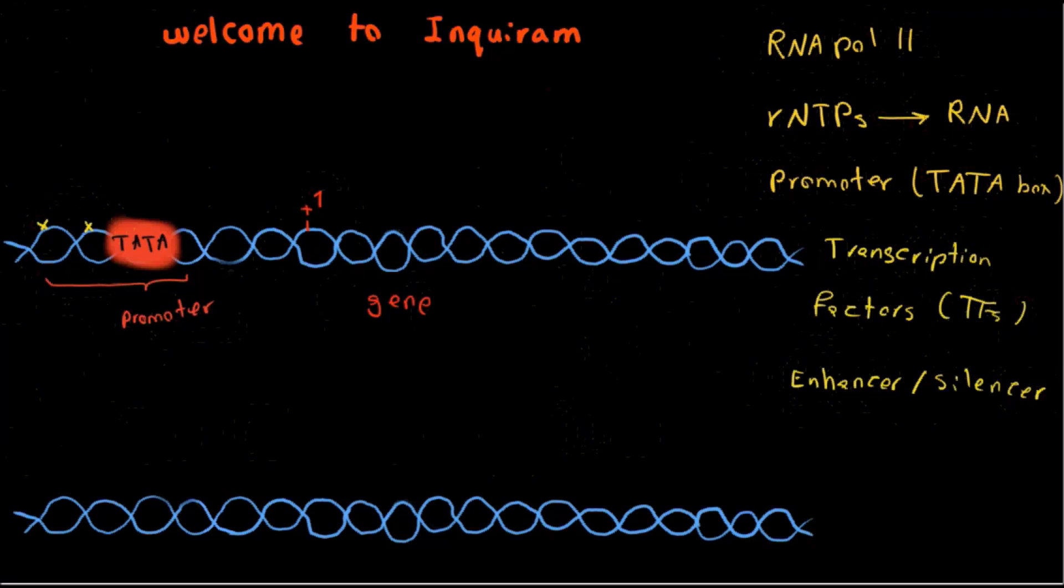Starting with initiation, the first step in formation of a transcription complex is the binding of a general transcription factor called TF2D. I draw it here. So TF2D binds to TATA box. TF indicates transcription factor, and 2 indicates polymerase 2.